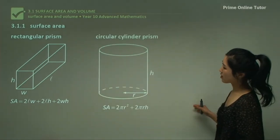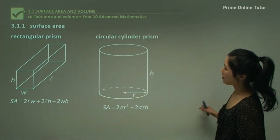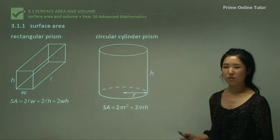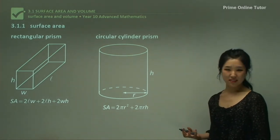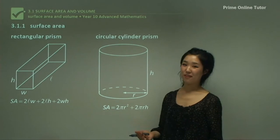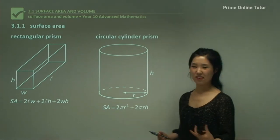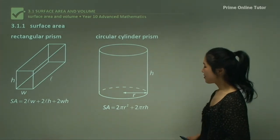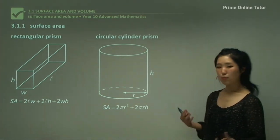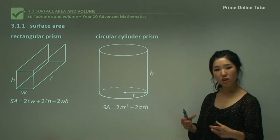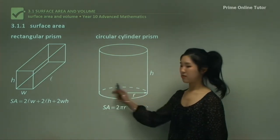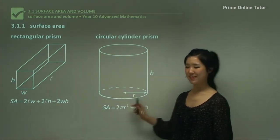Now have a look at the circular cylinder prism. This is a cylinder — we just call it a cylinder. It's actually a prism, a circular prism, so the base shape is a circle, as you can see.